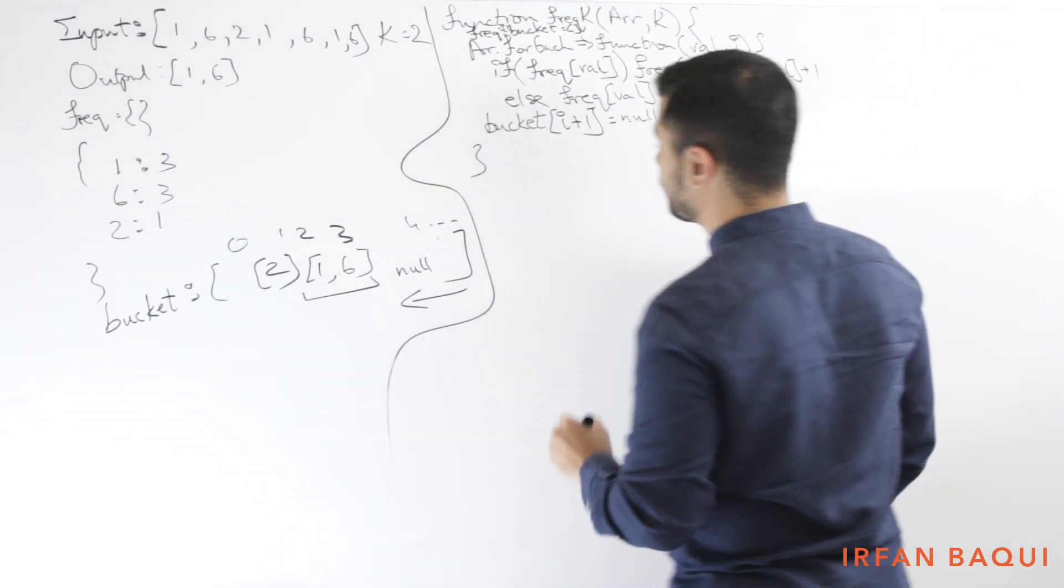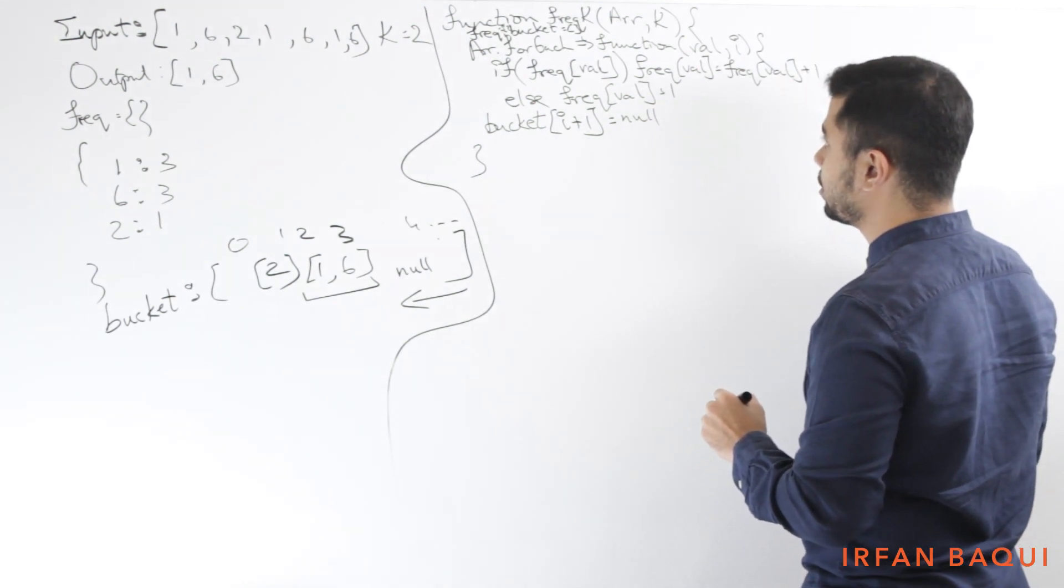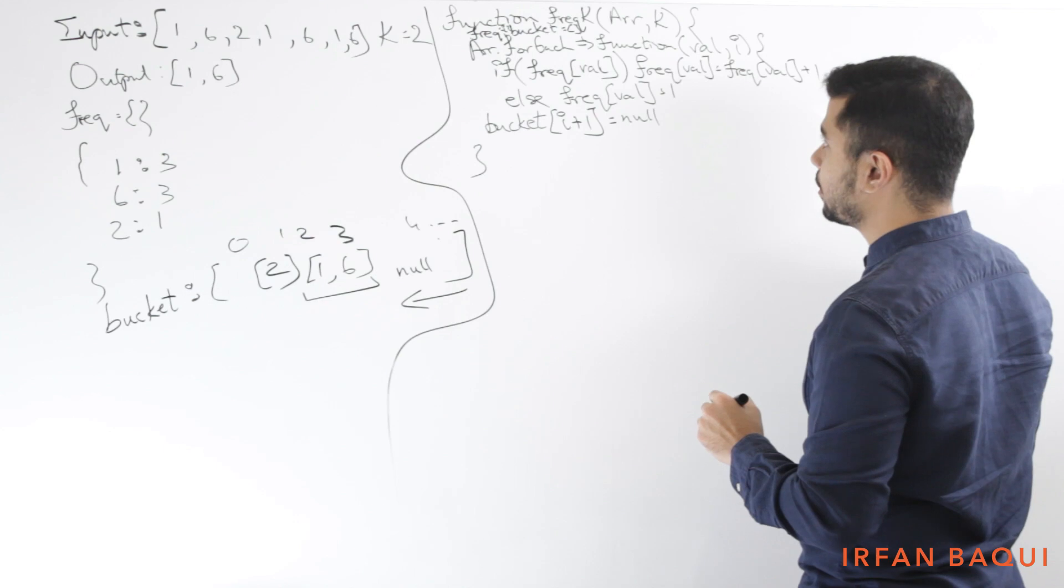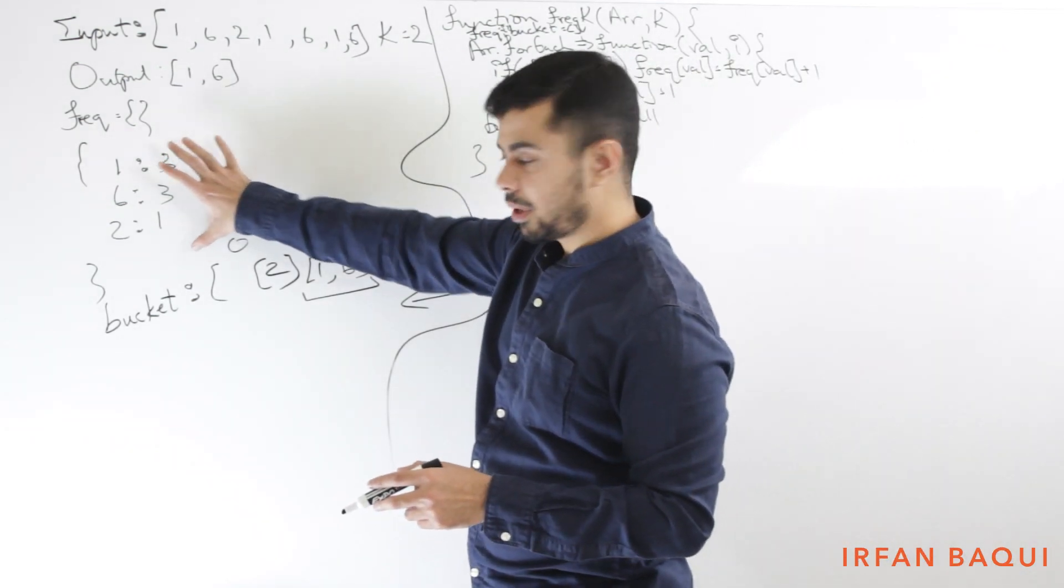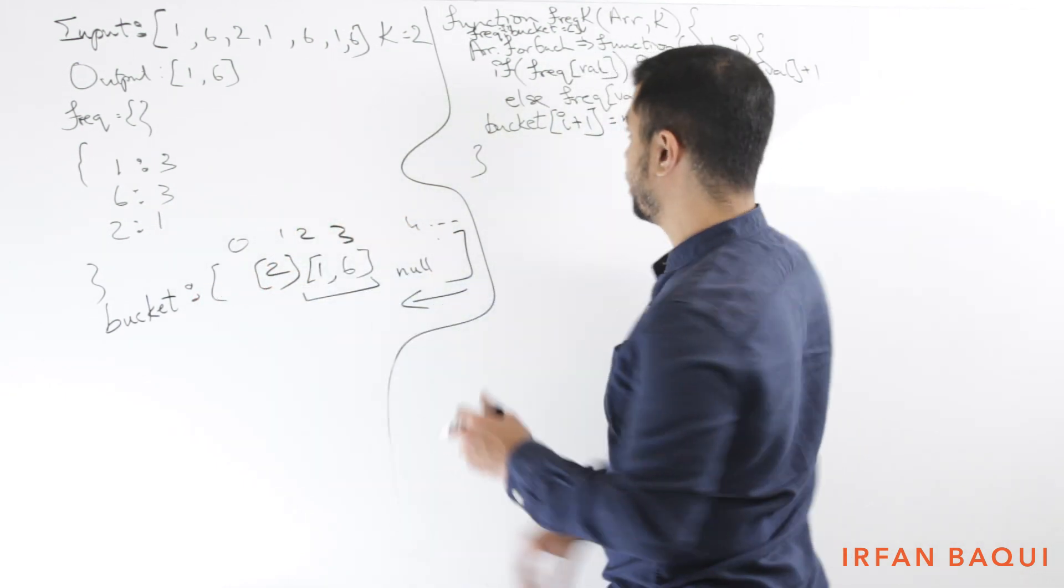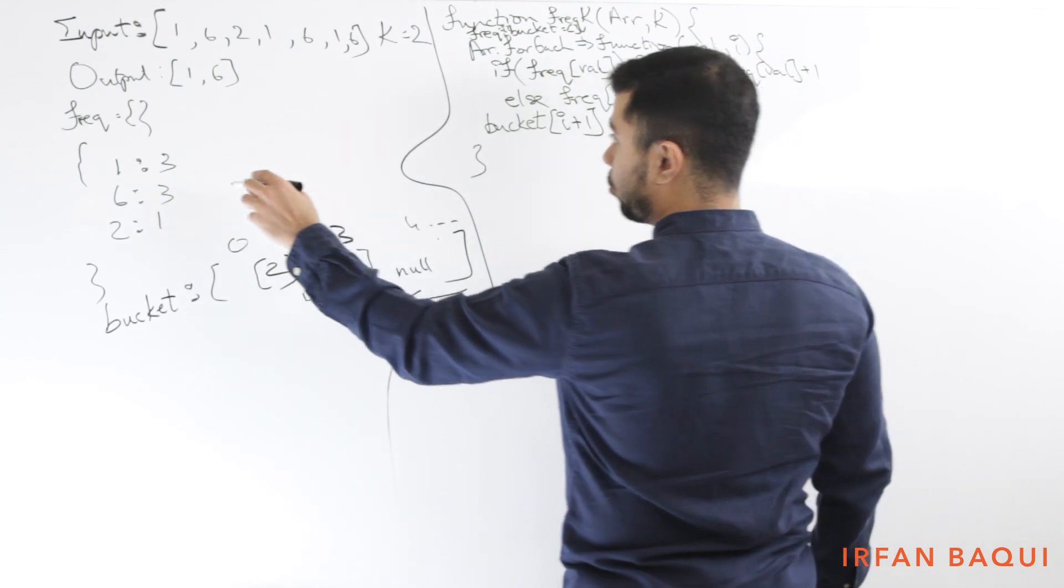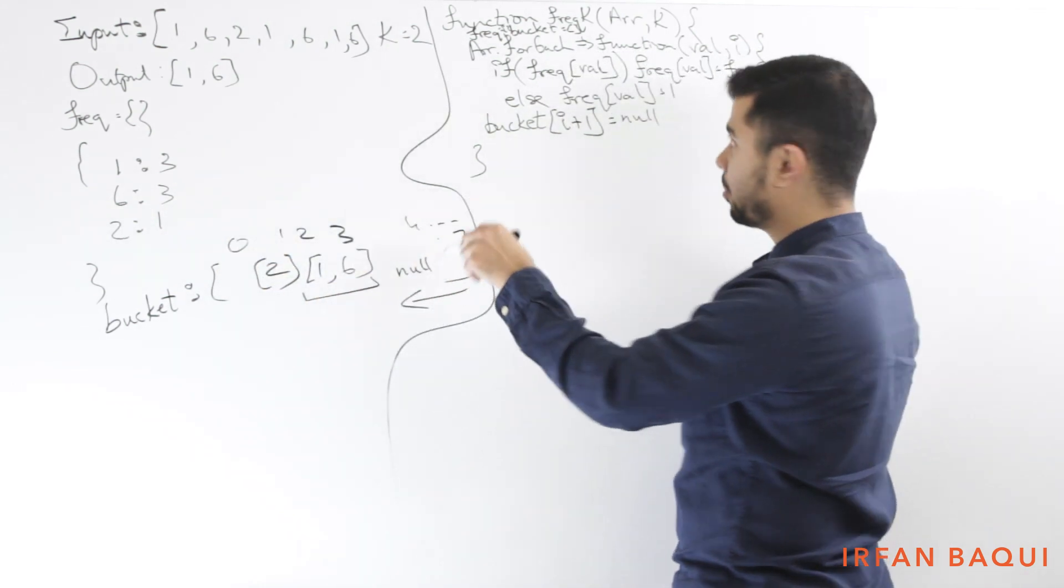So I close this and at this point, I'll have this hash map and a bucket full of nulls. So now what I want to do is I want to populate this bucket.